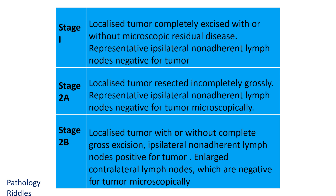Staging is dependent on whether the tumor can be completely resected, and whether ipsilateral and contralateral lymph nodes are involved, and whether the mass crosses the midline. In Stage 1, the whole mass can be completely resected with negative ipsilateral and contralateral nodes. In Stage 2A, the tumor is localized but cannot be resected completely, and ipsilateral lymph nodes are negative.